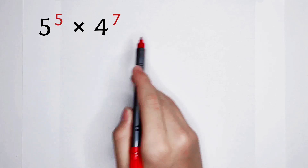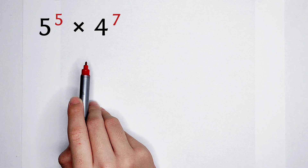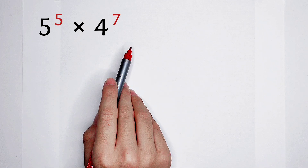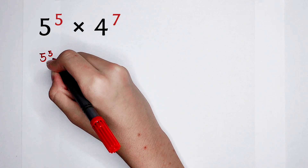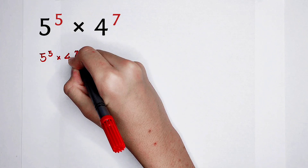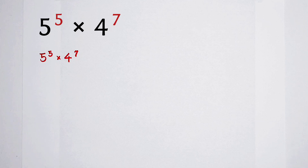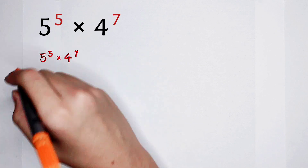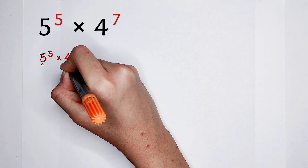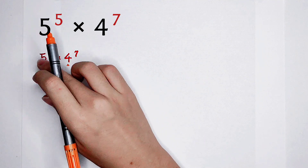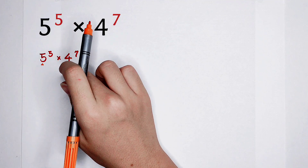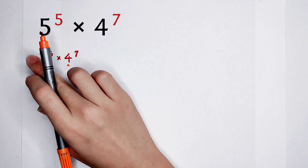Okay, before solving it, I have to write it down again and I'm going to teach you, I'm going to show you how to do this kind of question in general. 5 to the power of 5, then times 4 to the power of 7. Before solving it, I have two steps for you. The first step is we have to notice — look at the bases. There are two bases in this question: the first base is 5, the second base is 4. My question is, are there any relationships between them?